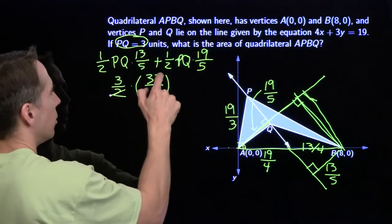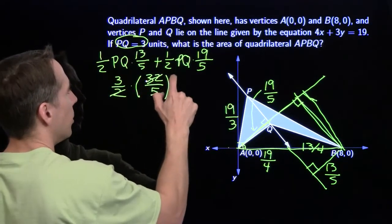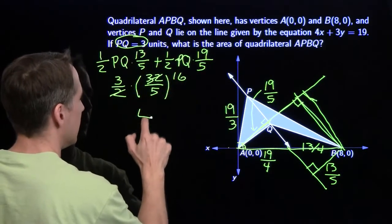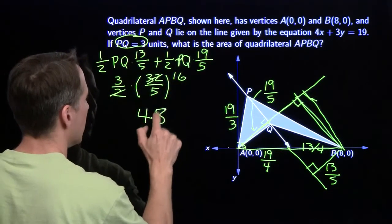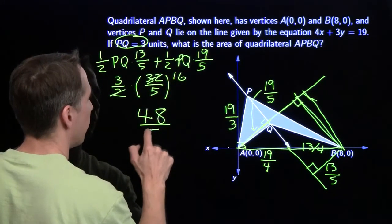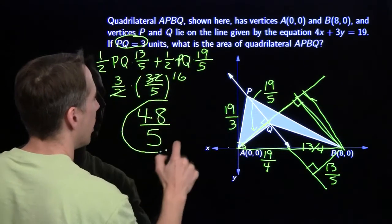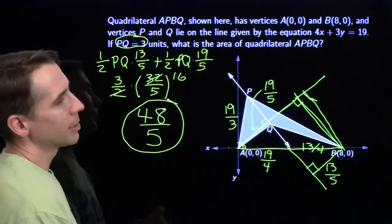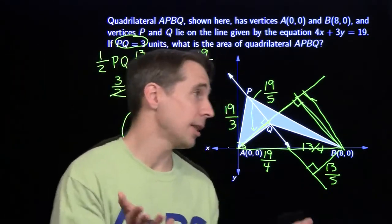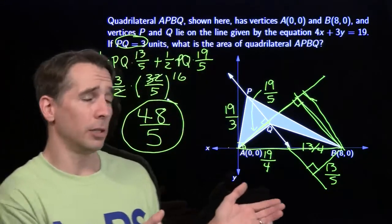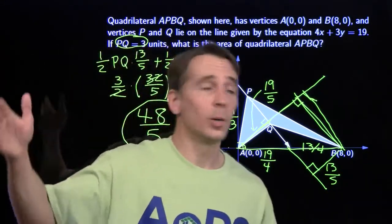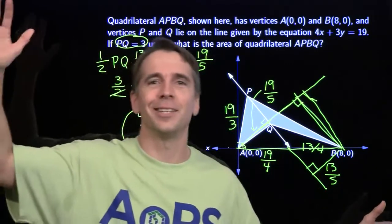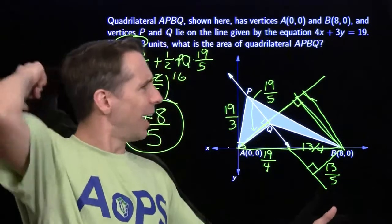Now I'm ready to finish the problem. 3 times 16 is 48 fifths — and that's the area of the quadrilateral. Awesome work, Harvey. This is the last mini of the year, so we're going to wave goodbye. See y'all later.